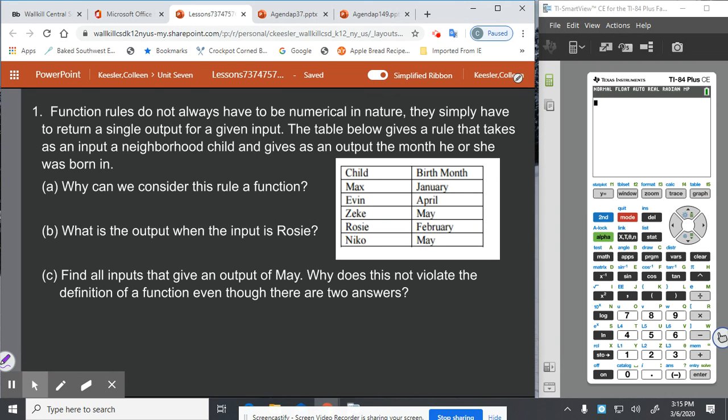First we have a function rule does not always have to be numerical in nature. They simply have to return a single output for a given input. The table below gives a rule that takes as an input a neighborhood child and gives an output the month he or she was born. Why can we consider this rule a function?